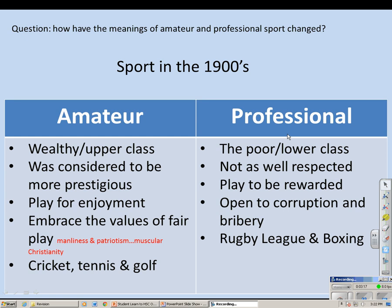As a professional sportsman in the 1900s you were generally from the poor or lower class. Professional sport was not as well respected as amateur sport — you played to earn money, and it was considered open to corruption and bribery, essentially the opposite of muscular Christianity. The two dominant sports for professionals in the 1900s were rugby league and boxing, while the dominant amateur sports were cricket, tennis and golf.